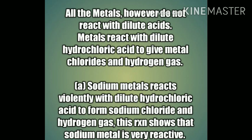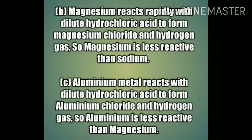Sodium reacts with dilute HCl to form sodium chloride (common salt) and hydrogen gas. Magnesium is also a highly reactive metal; when it reacts with dilute HCl, magnesium chloride and hydrogen gas are formed. Magnesium is less reactive than sodium. Aluminium also reacts with hydrochloric acid to form aluminium chloride and hydrogen gas. Aluminium is less reactive than magnesium.